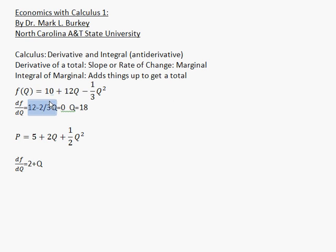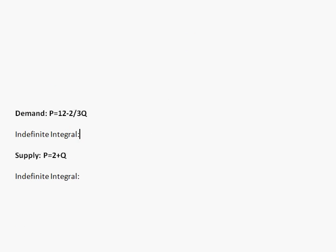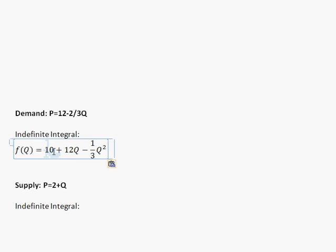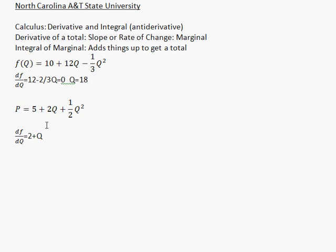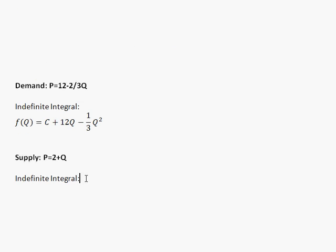However, there's no way to figure out where the constant 10 came from, so instead of the integral being 10 + 12q − 1/3 q², we write it as c + 12q − 1/3 q², where c is some unknown constant. Similarly, if we had a supply function 2 + q, its integral moves in the opposite direction to give the original function — but the constant 5 is unknown, so we again write it as c. That's the indefinite integral with an unknown constant.